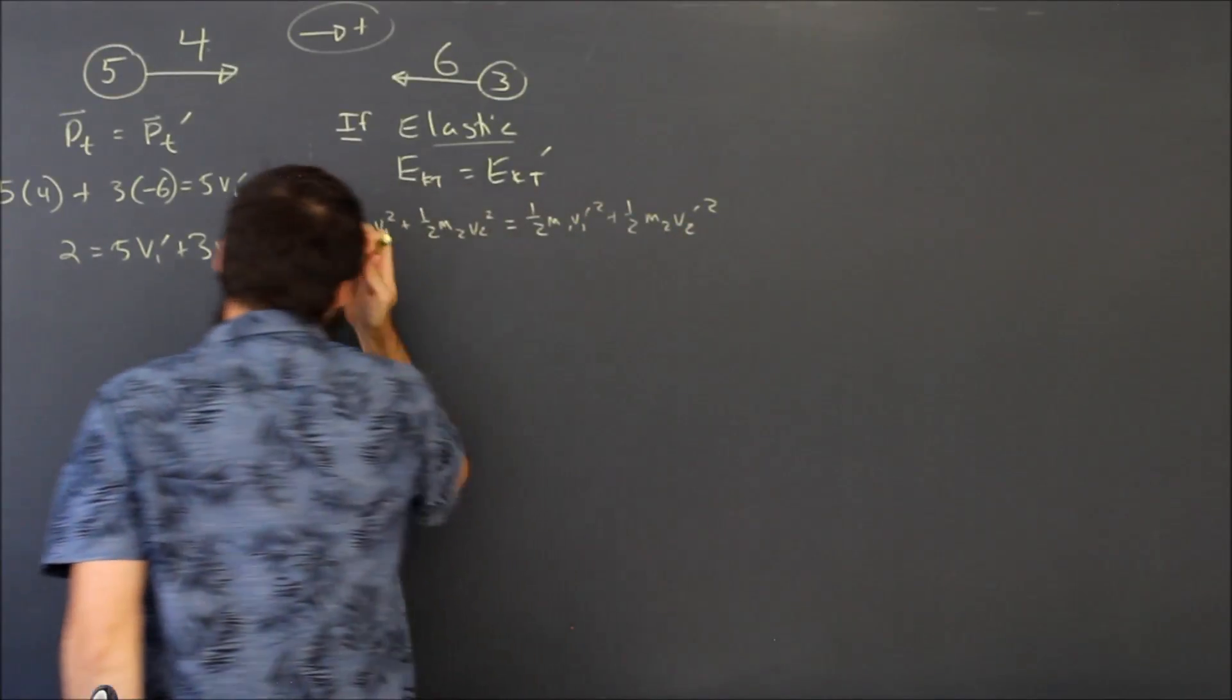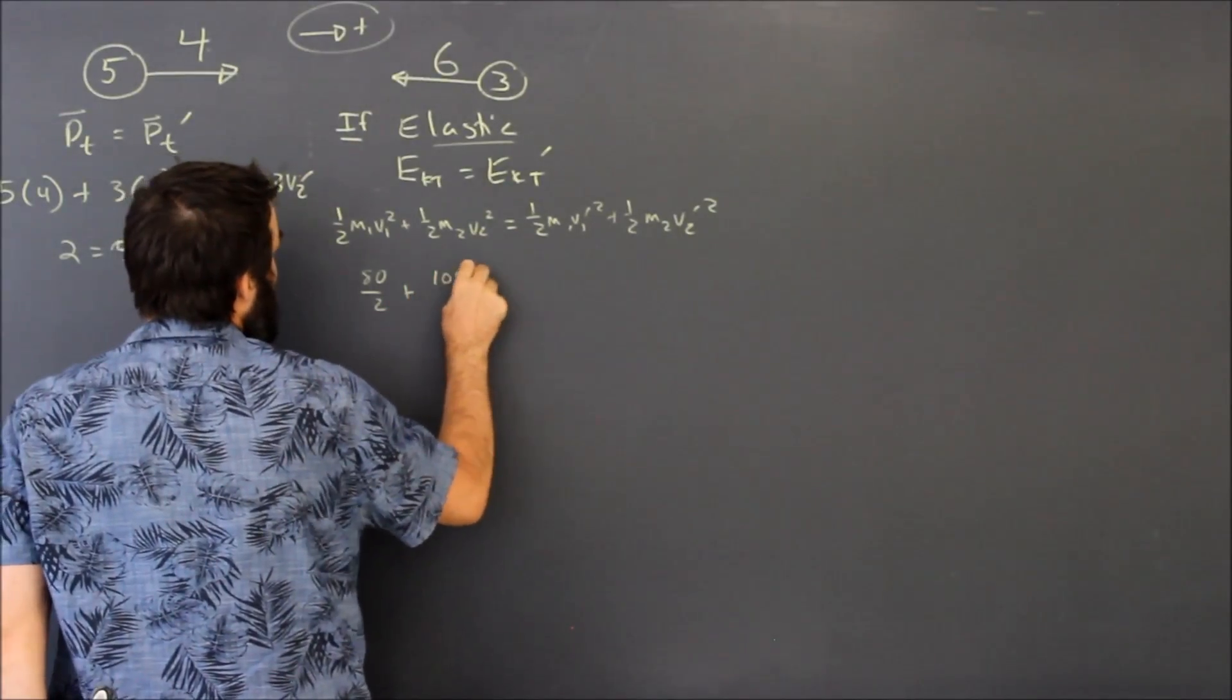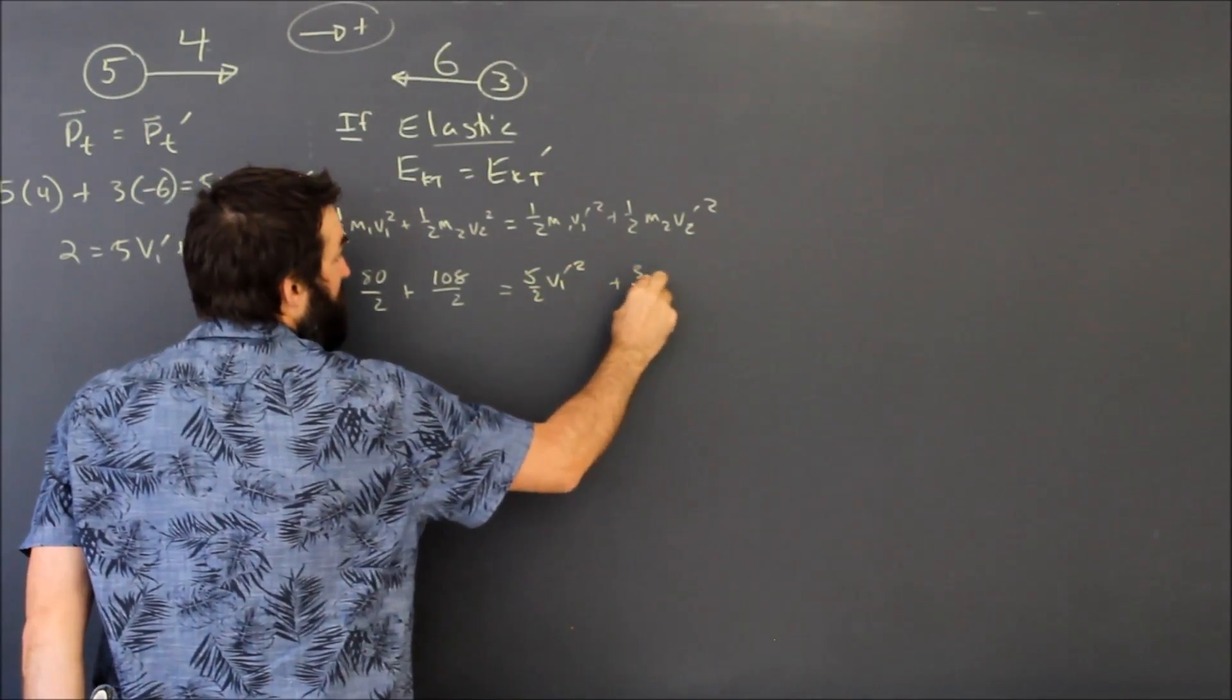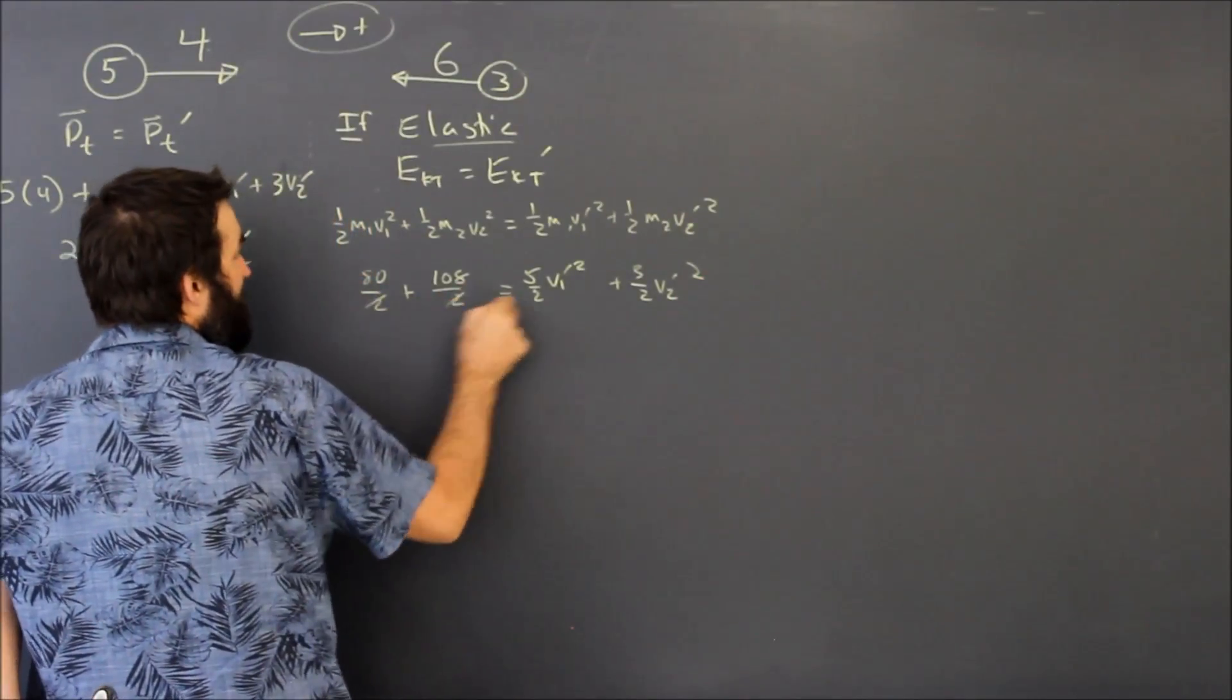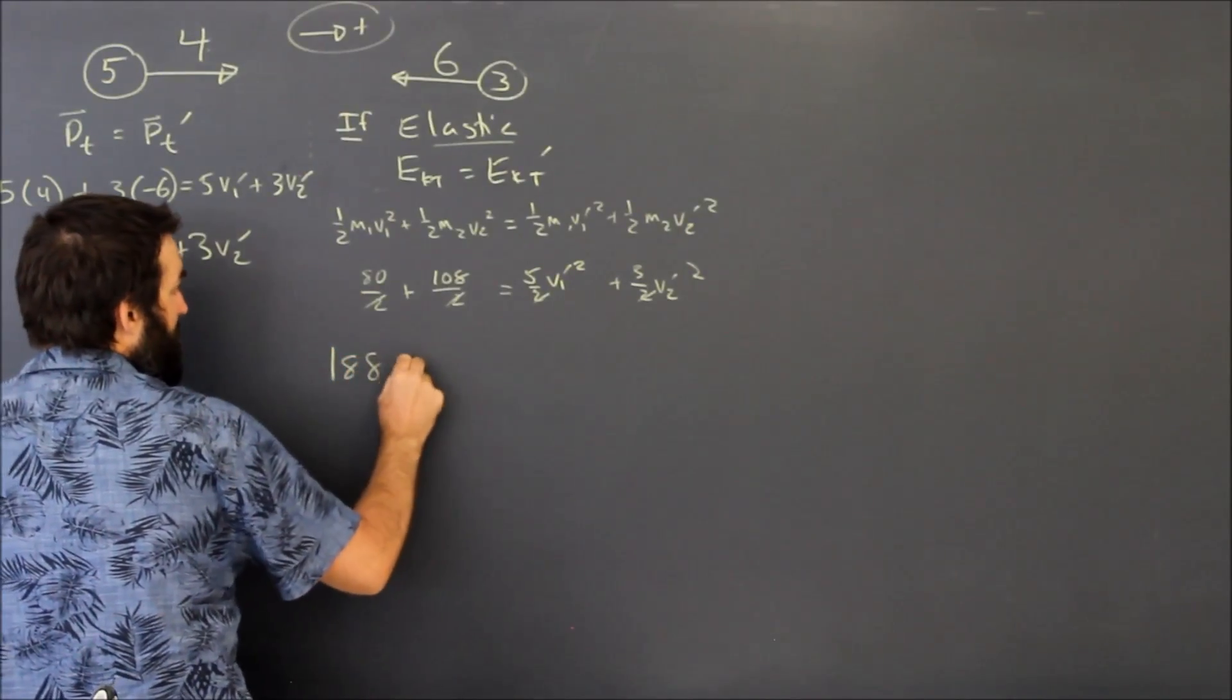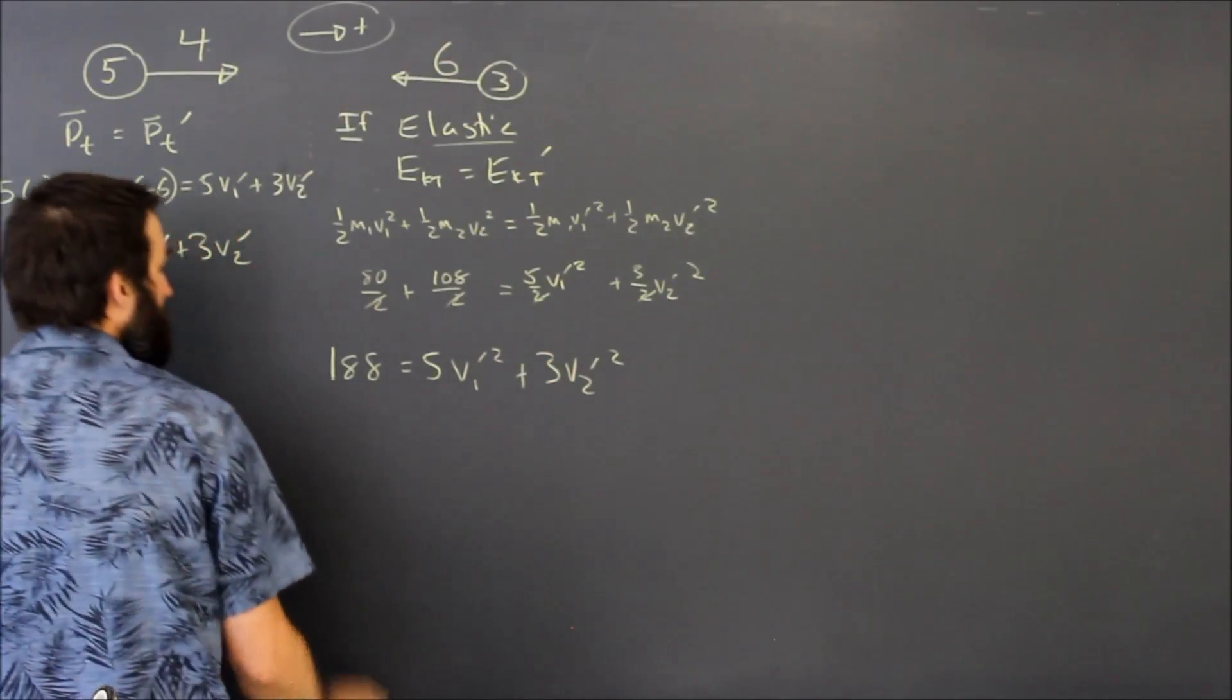If I simplify a few things in here, I end up with, I believe, 80 over two plus a hundred and eight over two is equal to five over two v one prime squared plus three over two v two prime squared. And I can cancel out those twos, add them up, and I end up with a hundred and eighty eight is equal to five v one prime squared plus three v two prime squared.